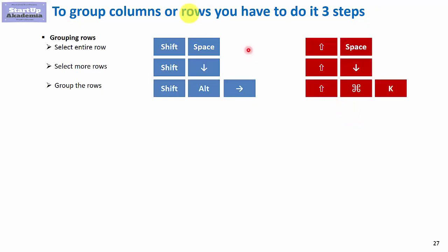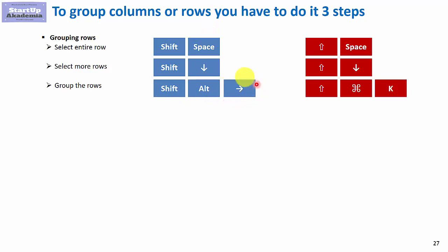Let's make a short recap on grouping and ungrouping. If you want to group rows, you should do it in three steps: first, select the entire row with Shift+Space; then use Shift and the arrow down or up to select more rows; and then Shift+Alt and the right arrow to group the rows.